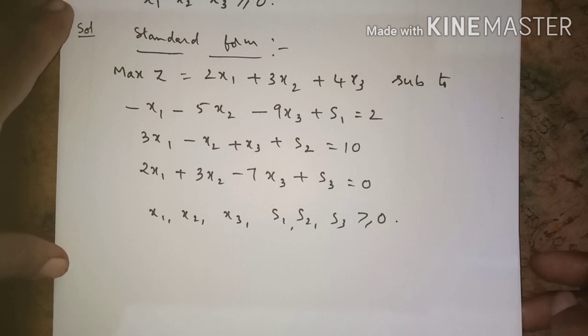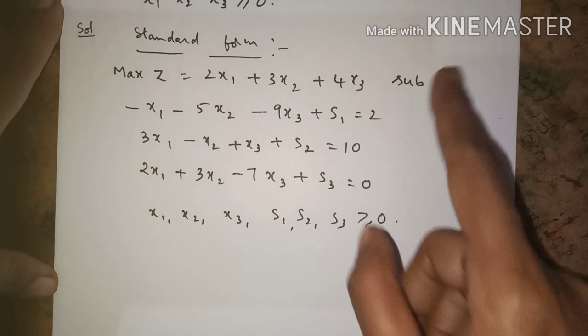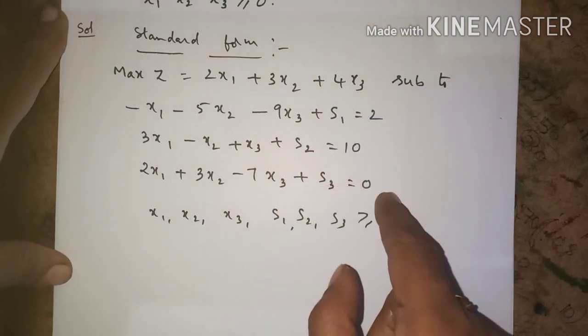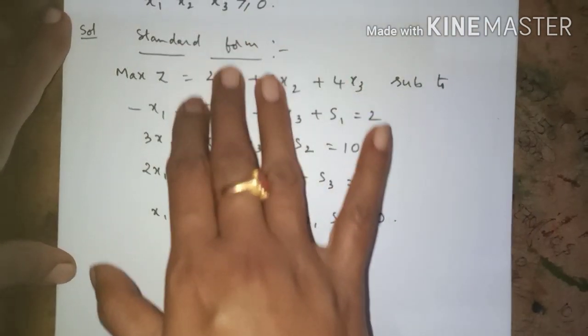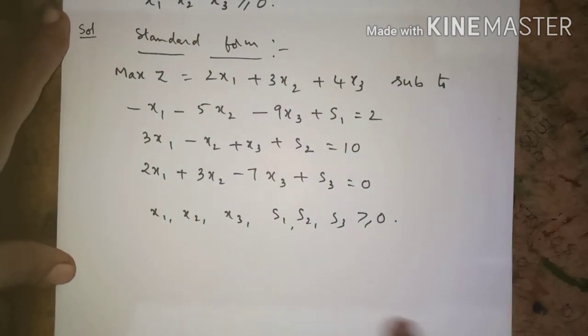In order to make these three constraints into equation form, we add three slack variables on the left-hand side. The first constraint gets s1, giving a constant of 2; the second gets s2, equal to 10; and the third gets s3, equal to 10. This is how we convert the LPP into standard form.